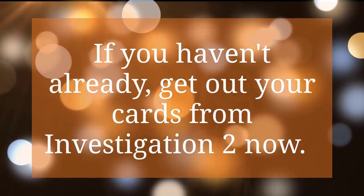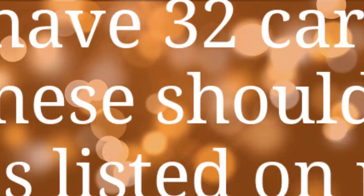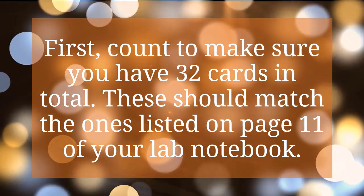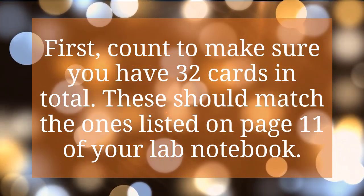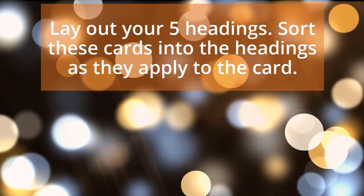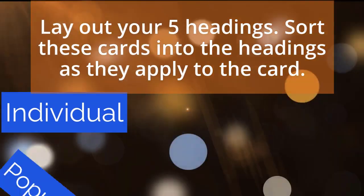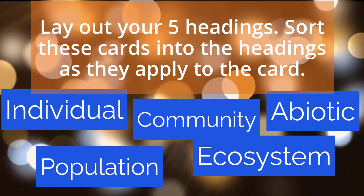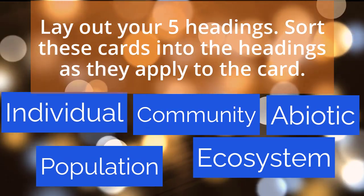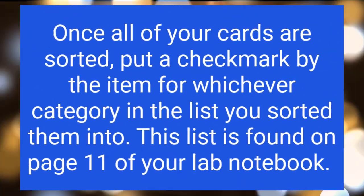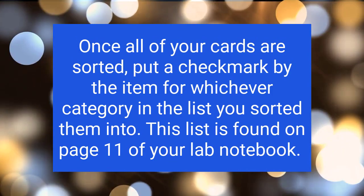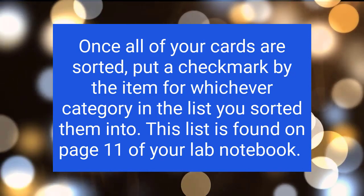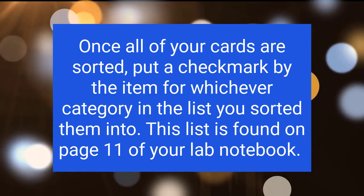If you haven't already, get out your cards for Investigation 2 now. First, count to make sure you have 32 cards in total. These should match the ones listed on page 11 of your lab notebook. Lay out your five headings: individual, population, community, ecosystem, and abiotic. Then sort the cards into those headings as they apply. Once all of your cards have been sorted, put a check mark by the item for whichever category in the list you sorted them into. This list is found on page 11 of your lab notebook, which should already be open on your iPad.